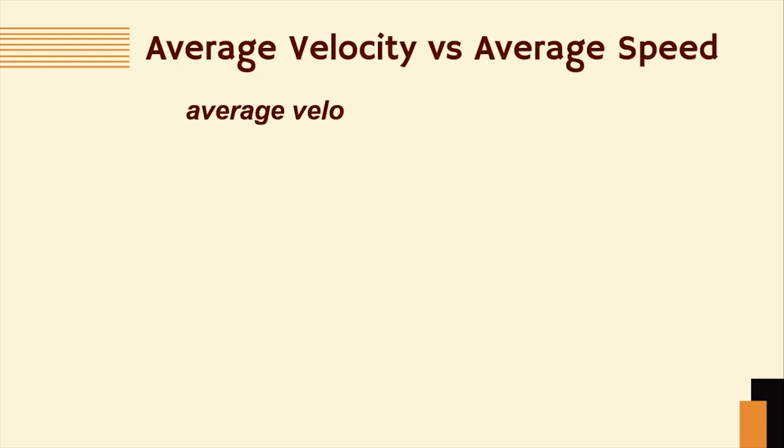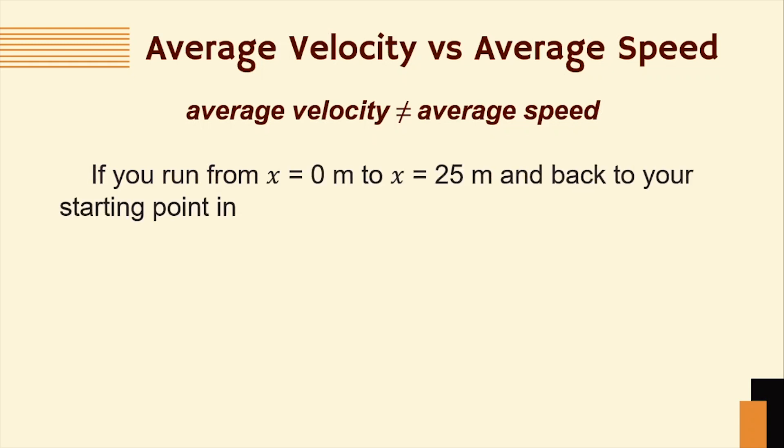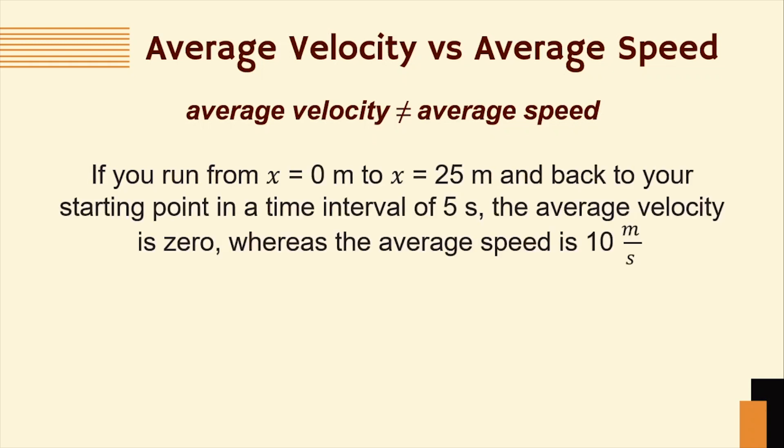Remember that these two quantities are not equal. Let's say for example, if you run from 0 meters to 25 meters and back to your starting point in a time interval of 5 seconds, the average velocity is 0, whereas the average speed is 10 meters per second. Now, how did we come up with that conclusion?